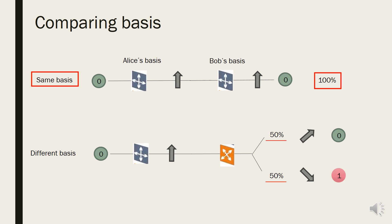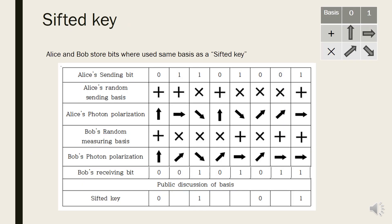That is the reason why they discard keys that use different bases, and only store ones that use the same bases out of each raw key. We call the stored key with the same bases as sifted key. Let's look at this example.